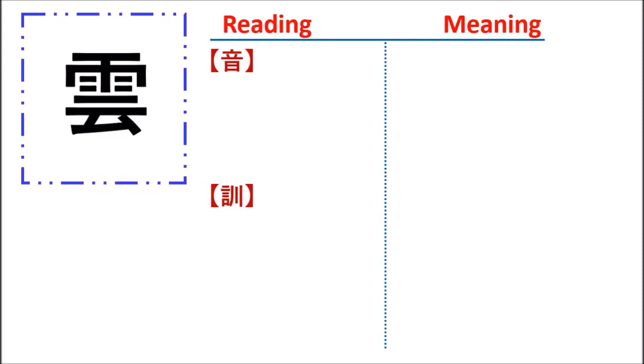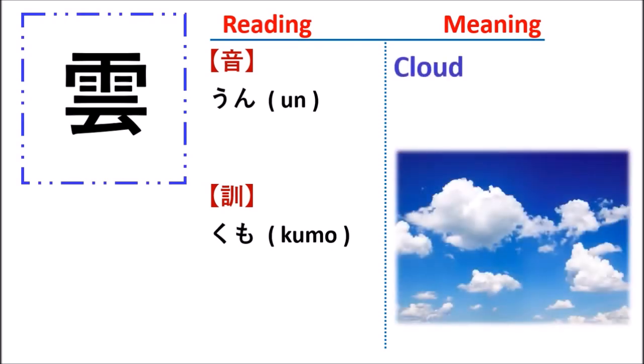Kanji 雲. On'yomi: un. Kun'yomi: kumo. This kanji has the meaning of cloud.